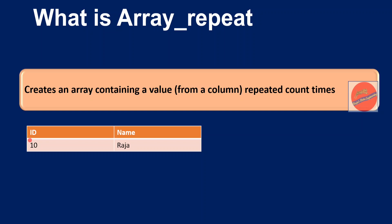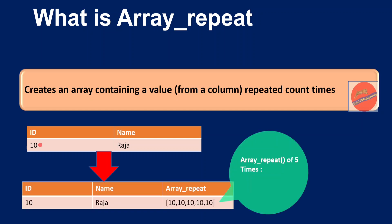I want to create one new array column which contains repeated values of one of the columns. This can be achieved using arrayRepeat. If I apply arrayRepeat 5 times, the id value will be repeated 5 times and the result will be an array. This is how the arrayRepeat function works — it creates an array value with a repeated count of the value from another column.